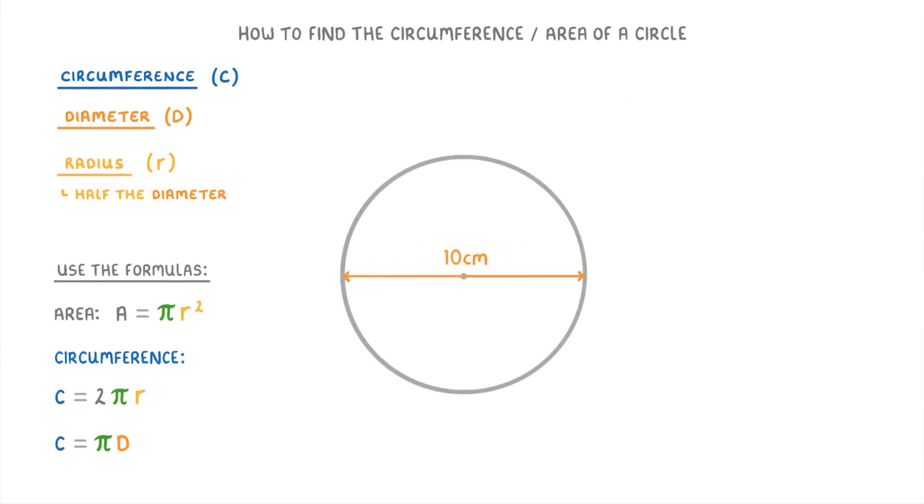Let's try one more before we finish, and find the area and circumference of this circle. At the moment, all we know from the diagram is that the diameter of this circle is 10 centimeters.